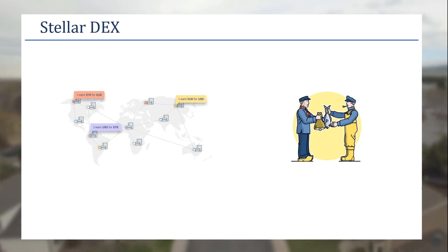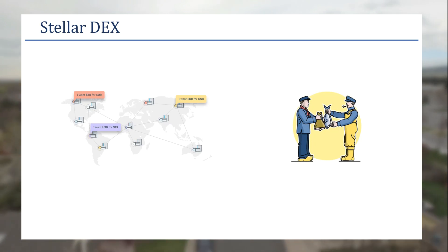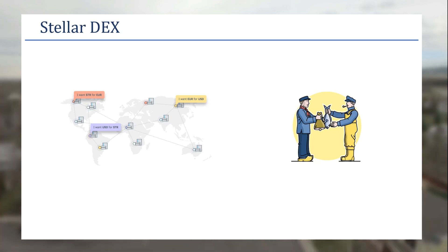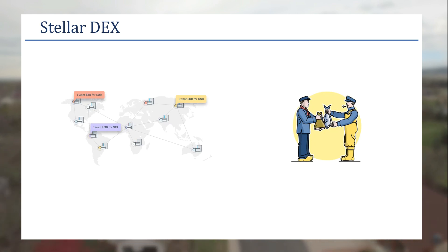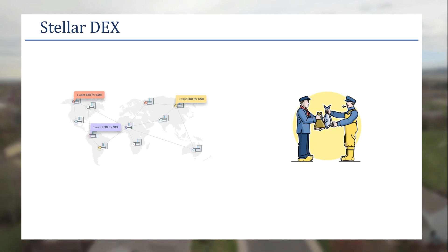You can create any type of asset and use those for decentralized exchanges or trading. For example, you can create a meat asset and trade it with a fish asset, or if you have oranges you want to trade with someone who has apples. You can create your own coins and trade against other people, or even use that as payment transactions.